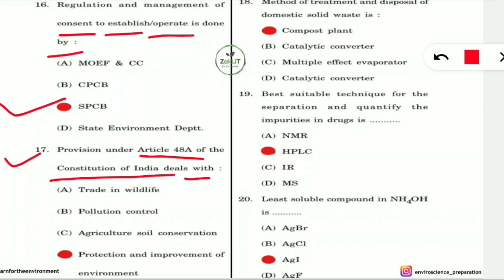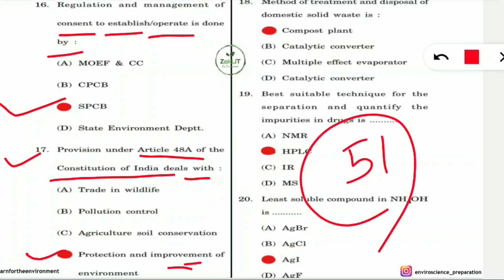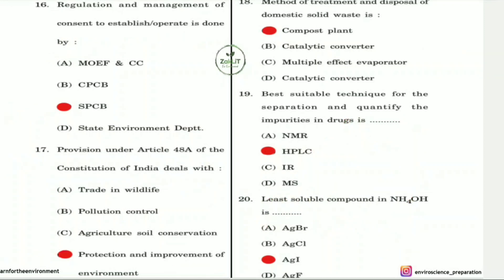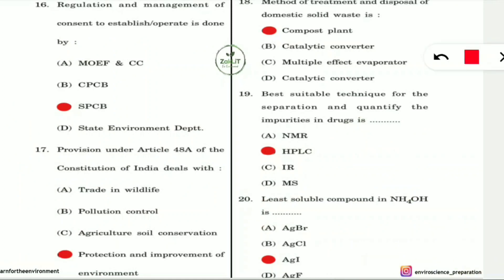Question 17: What does Article 48A of the Constitution of India deal with? It deals with the protection and improvement of the environment. Under Article 48A, the state is responsible to protect and improve the environment. Article 51A also includes the duty to protect the environment.